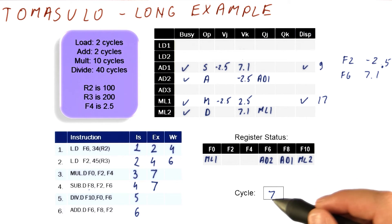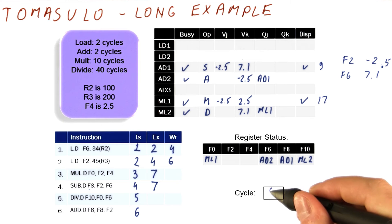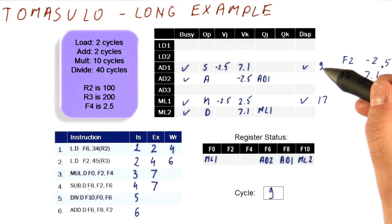In cycle eight, pretty much nothing happens except that these two are executing. In cycle nine, what's going to happen is this instruction is going to try to broadcast. And because there is nothing else that wants to broadcast in this cycle, this broadcast will happen.